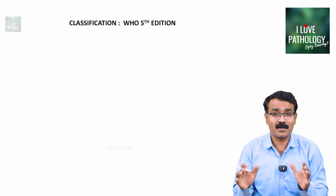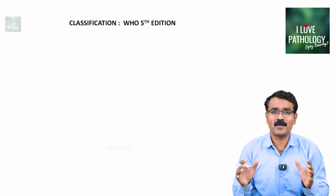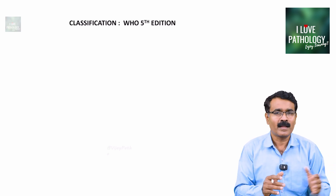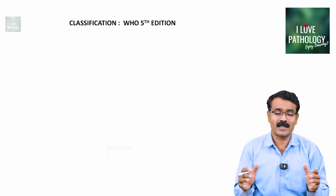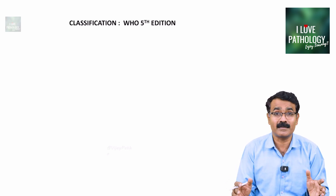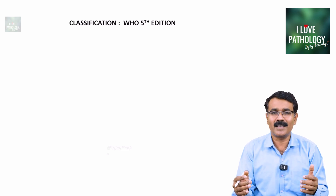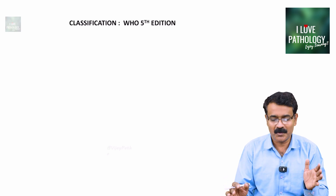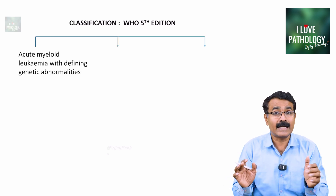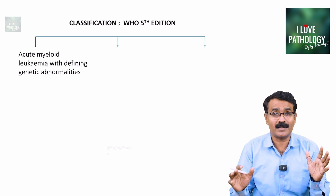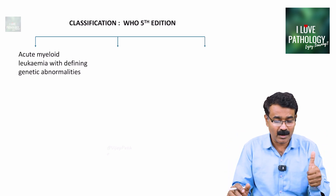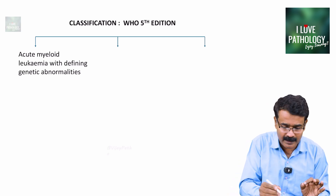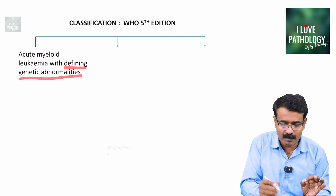Classification of acute myeloid leukemia is one of the most difficult aspects. We have seen many classifications — morphological, molecular, FAB classification. Now, thankfully, the new WHO classification has simplified the classification of acute myeloid leukemia. It is categorized into broadly two categories. The first one is acute myeloid leukemia with defining genetic abnormalities.